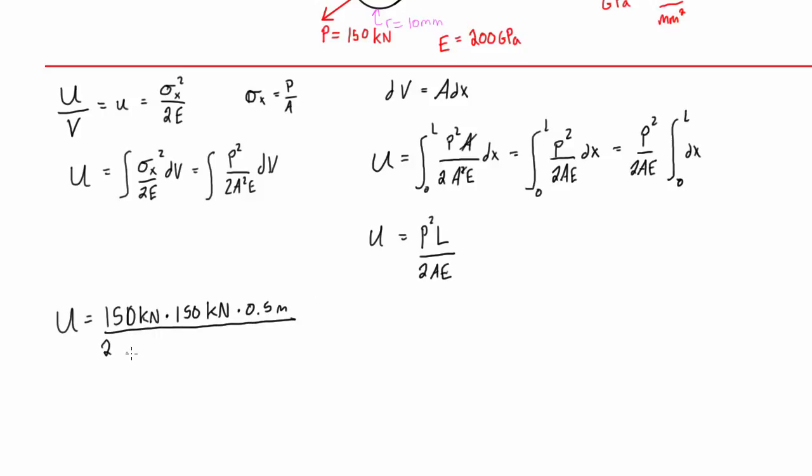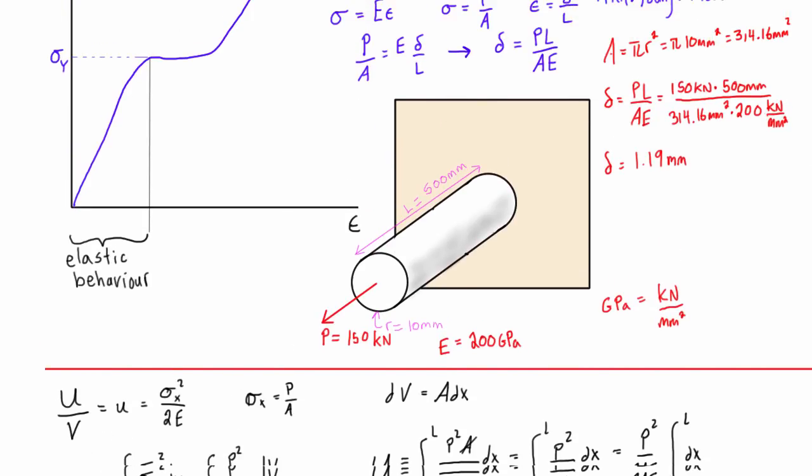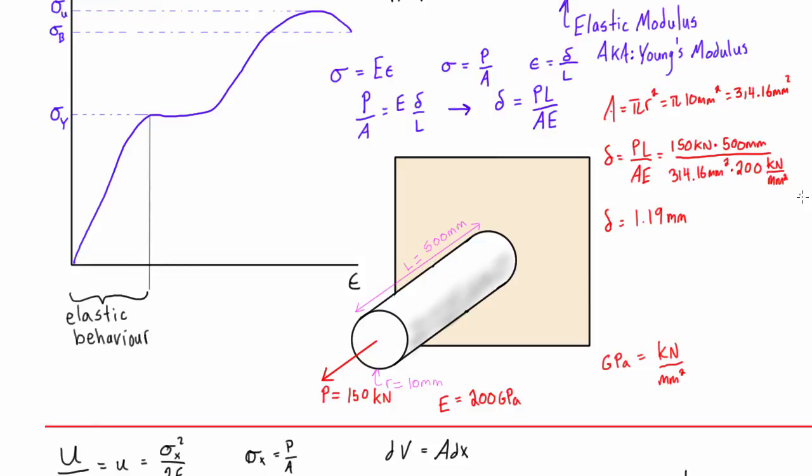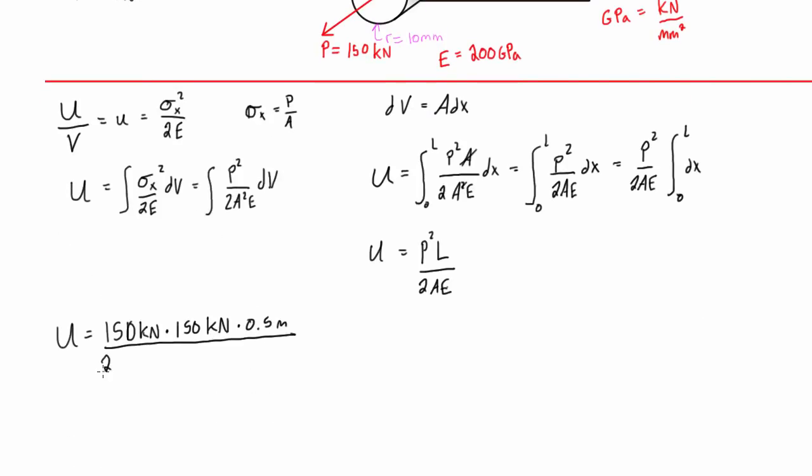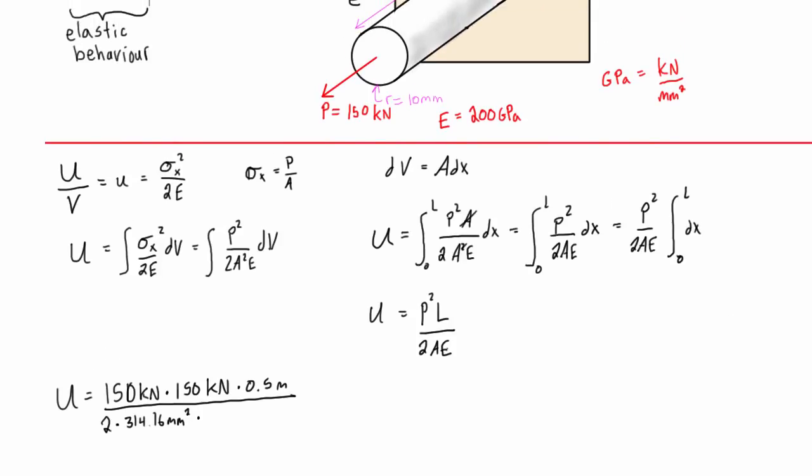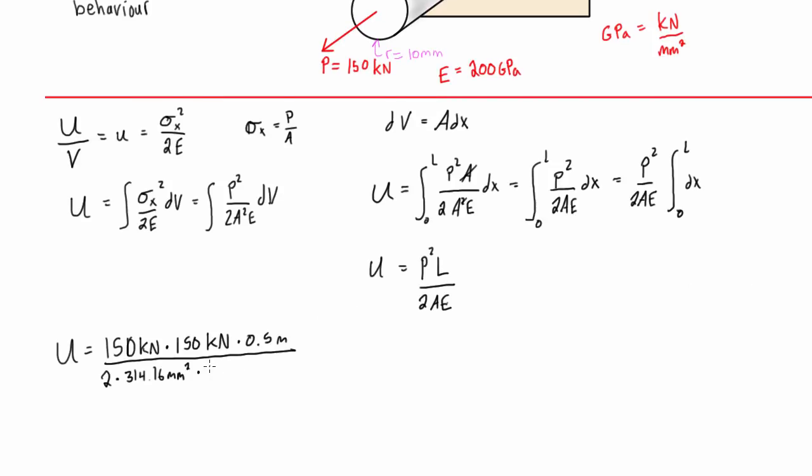Down here on the bottom, we have 2 times the cross-sectional area. Cross-sectional area we've already calculated here to be 314.16 millimeters squared, so let's drop that in, 314.16 millimeters squared, and times the last thing here.